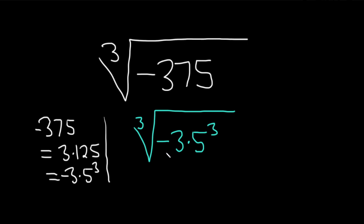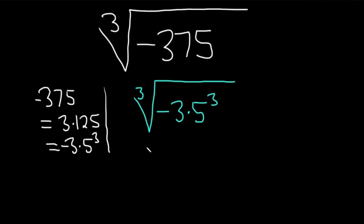So this now becomes the cube root of negative 3 times 5 to the third power. So now we can just take the cube root of each piece. So this is going to be the cube root of negative 3 times the cube root of 5 to the third power.